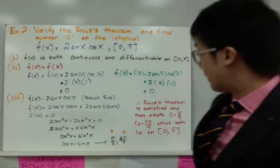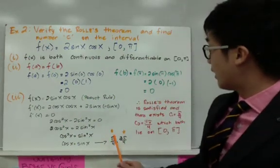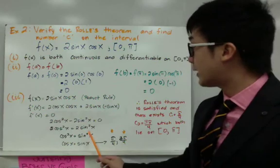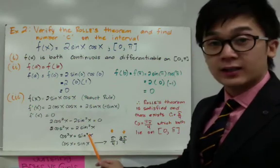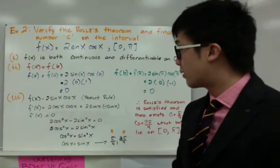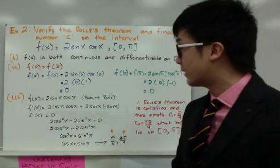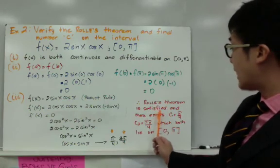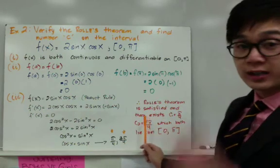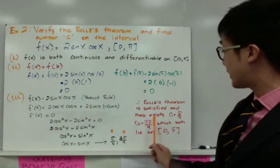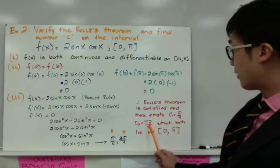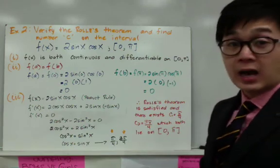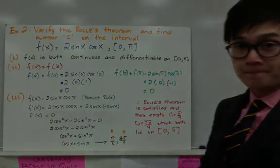Therefore, the values of c that have the same slope as the secant line AB satisfy Rolle's Theorem. There exist two values of c — pi over 4 and 3 pi over 4 — both of which lie within the closed interval [0, π].